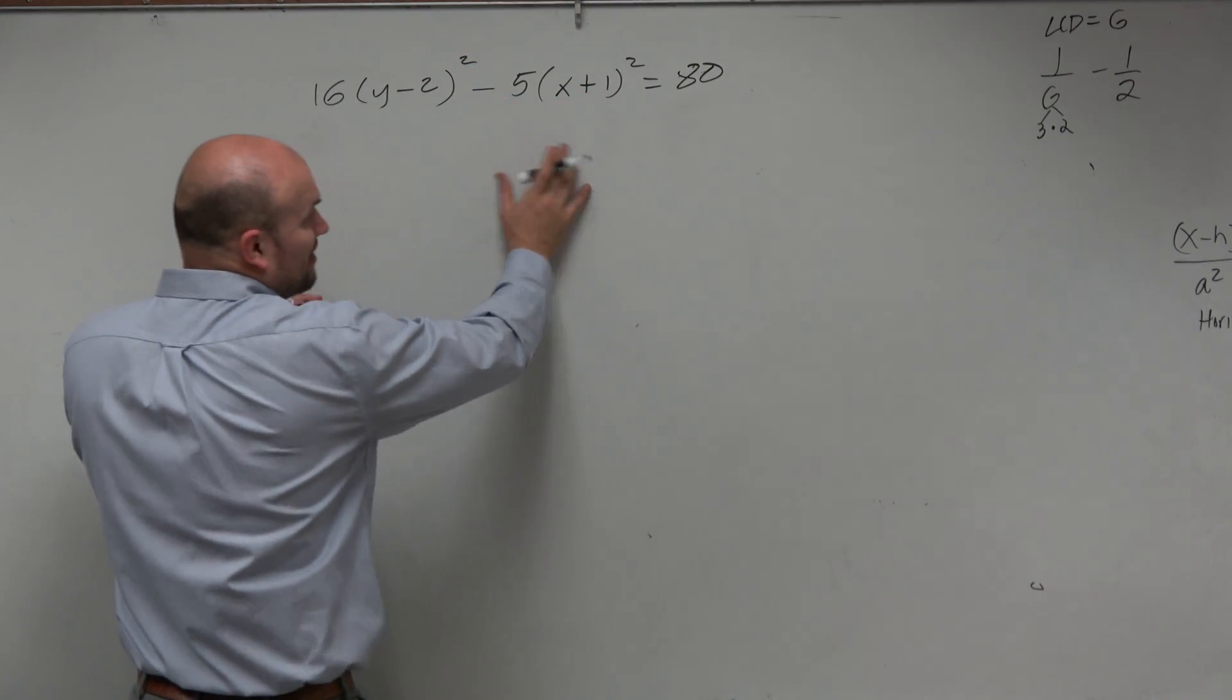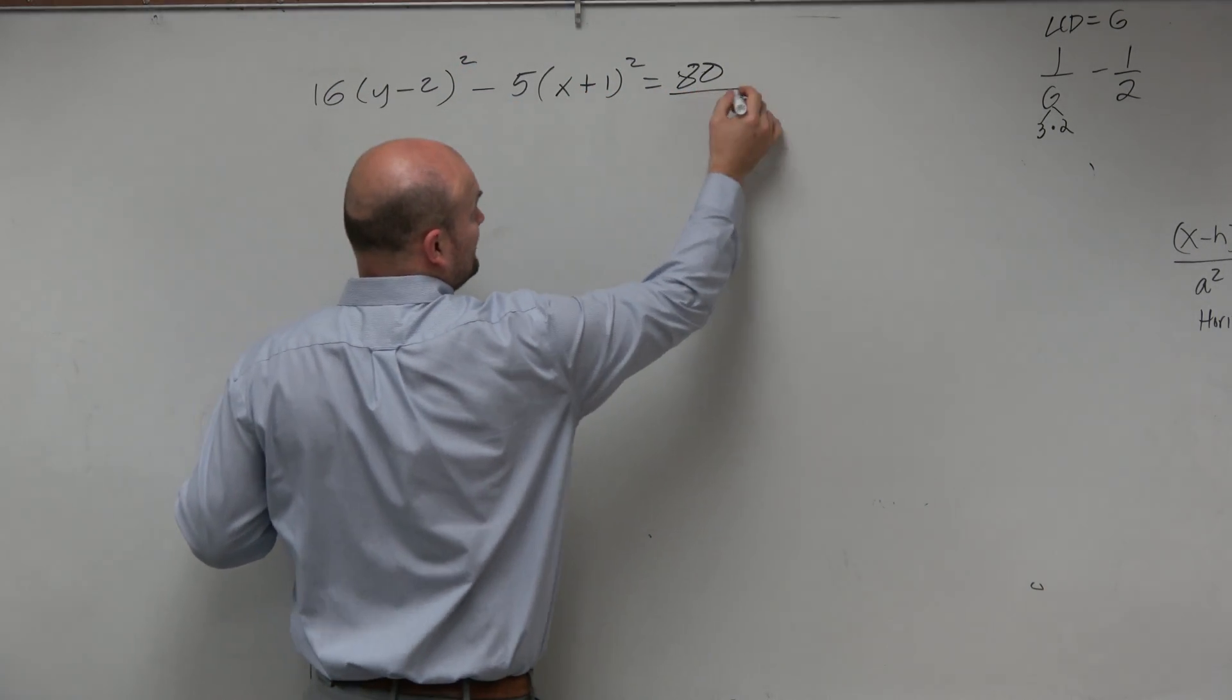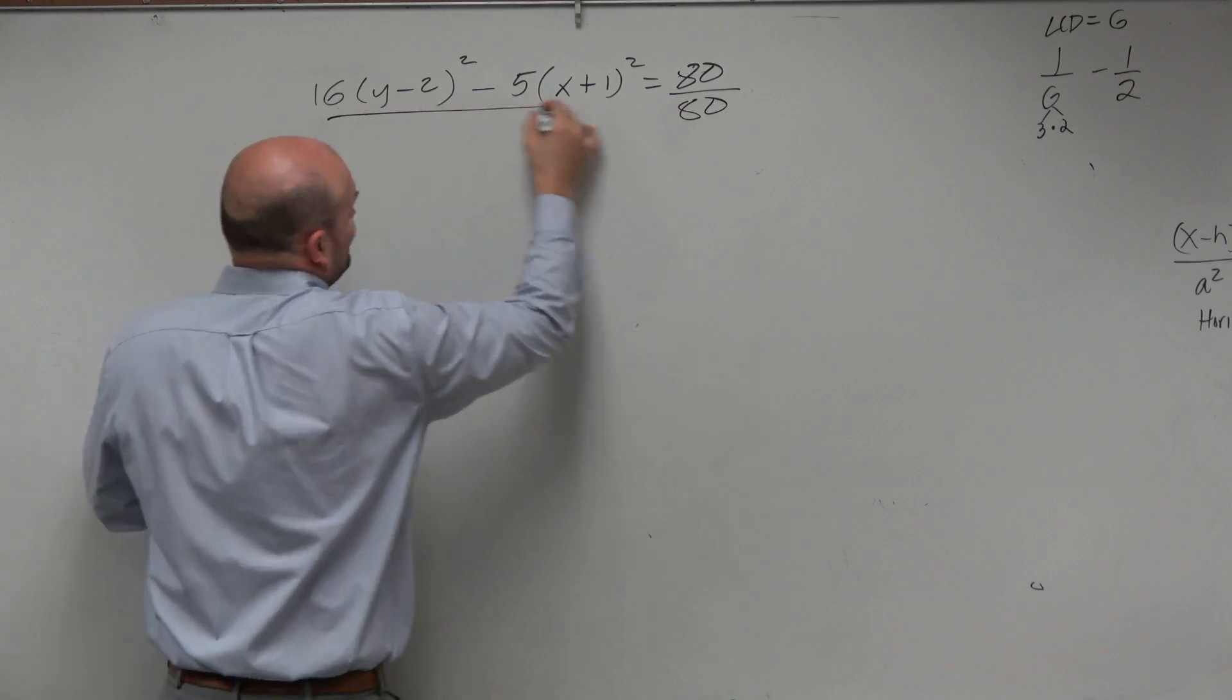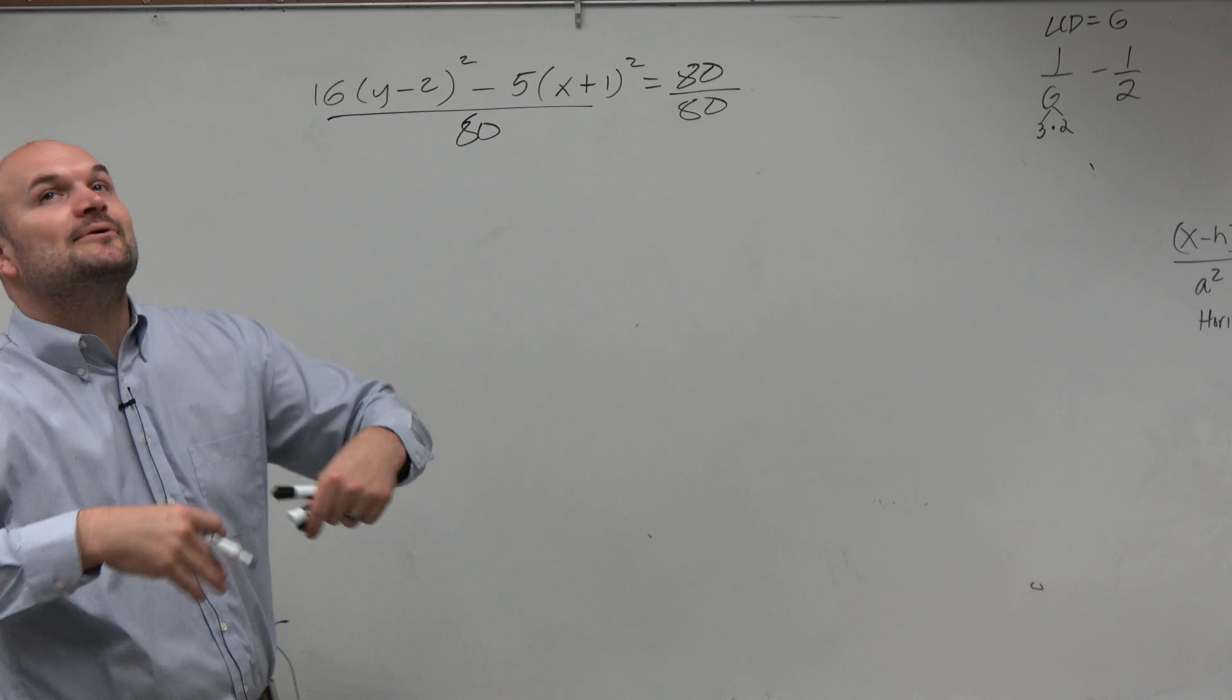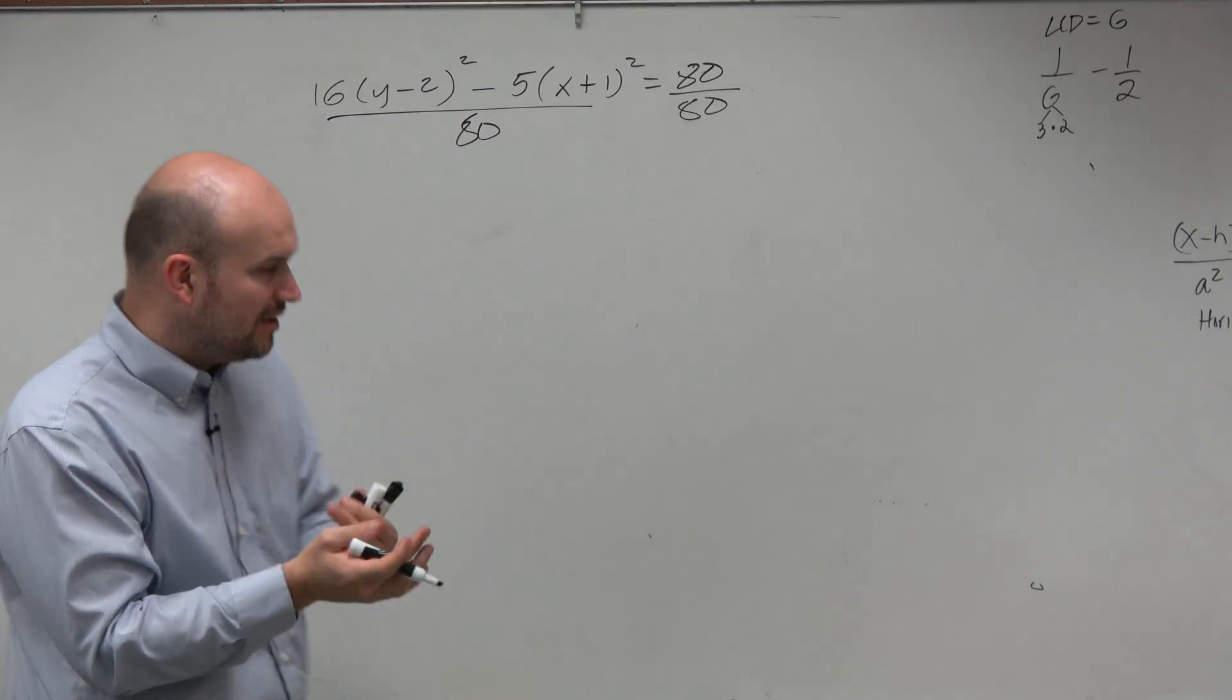All right, so again, this is not standard form. This equals 80. We want it to equal 1, so we've got to divide by 80 on both sides. Therefore, 16 over 80, that reduces to 1 over 5.